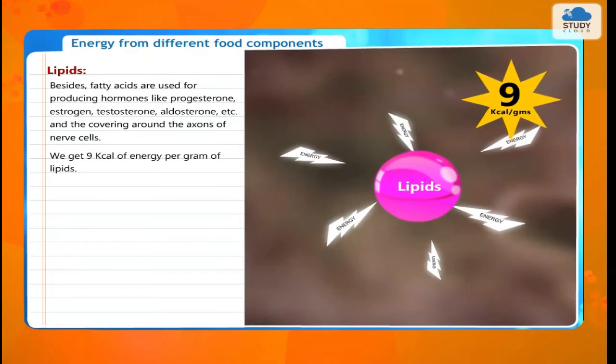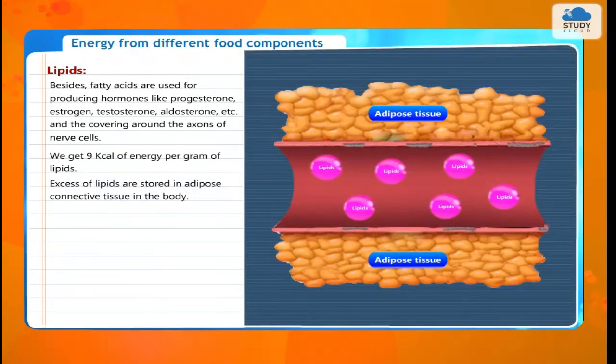We get 9 kilocalories of energy per gram of lipids. Excessive lipids are stored in adipose connective tissue in the body.